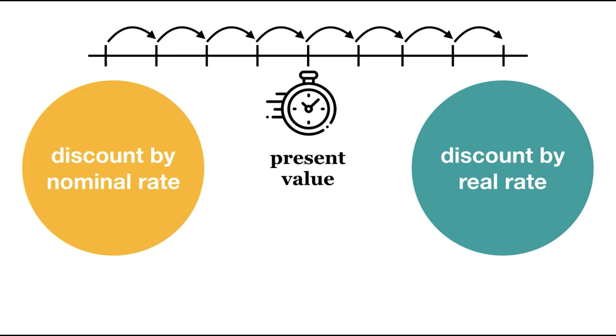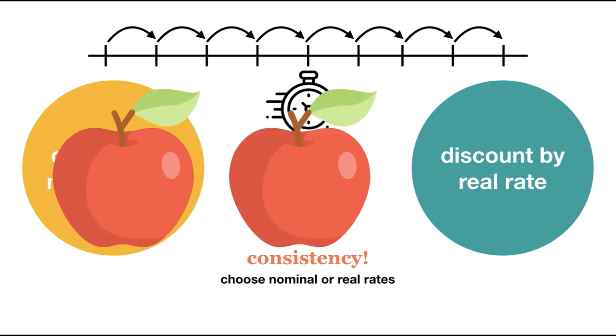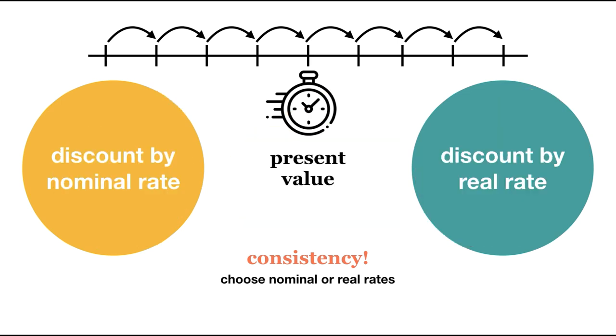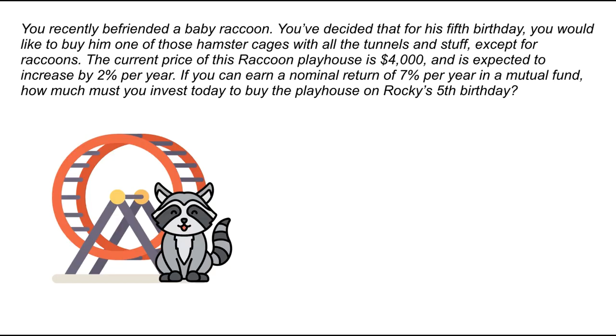The key here is being consistent. We should express all of our cash flows and discount rates in either nominal or real terms so that we can compare apples to apples, the same way you'd convert cash flows into the same currency before adding or comparing them. Let's try an example using these two different methods, discounting nominal returns and discounting real returns. Pause the video and try this problem on your own.